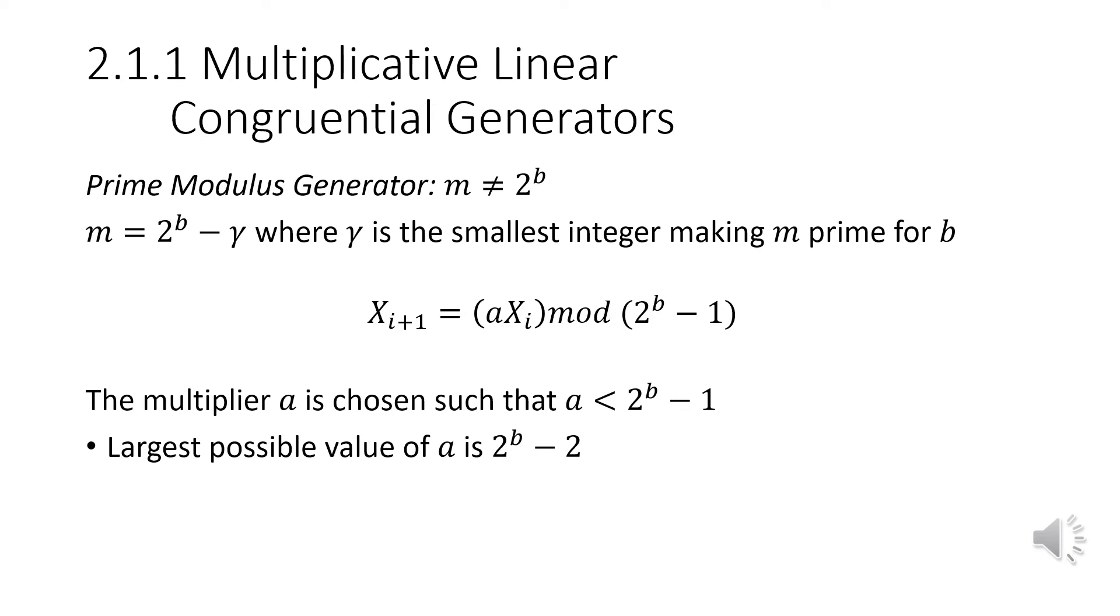For prime modulus generators, we know that M is not equal to two to the B. Instead it is two to the B minus lambda, where lambda is the smallest integer making M prime for B. So the B bits of A sub i minus one cannot be expressed in binary. Because of this, we do some bit shifting, to suppose that the modulus is two to the B minus lambda.